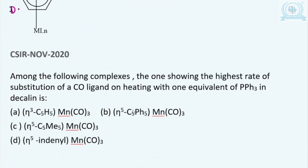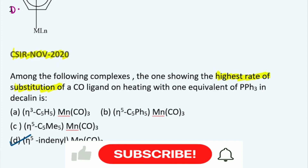There is another question from CSIR NET November 2020: among the following complexes, which one shows the highest rate or fastest rate of substitution? Obviously it is the Indenyl species as compared to the others. The Indenyl species here shows the fastest substitution. The answer is C. So this is a very small topic but very important and interesting. I hope you liked our video — thank you for watching.